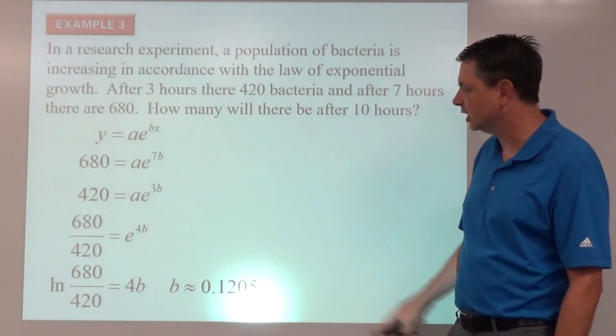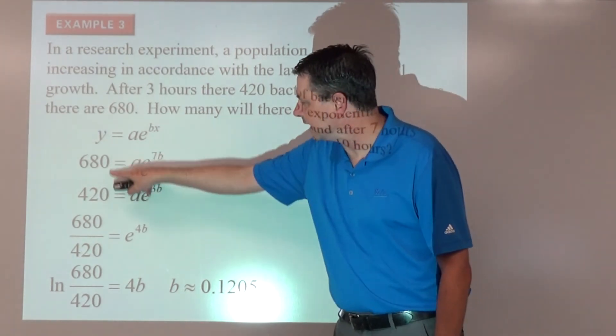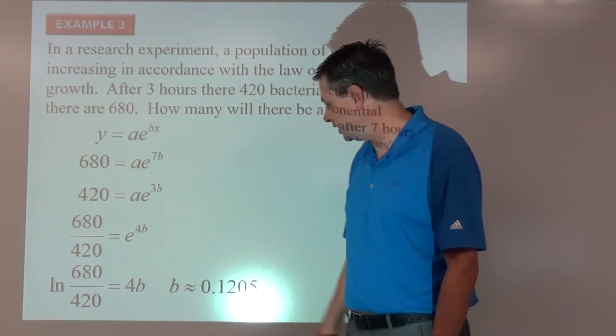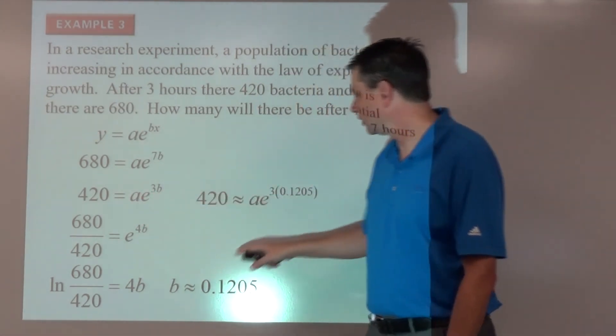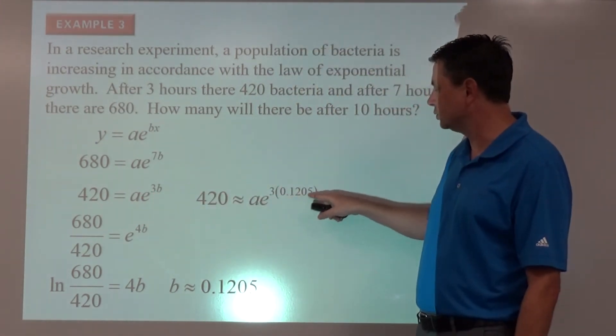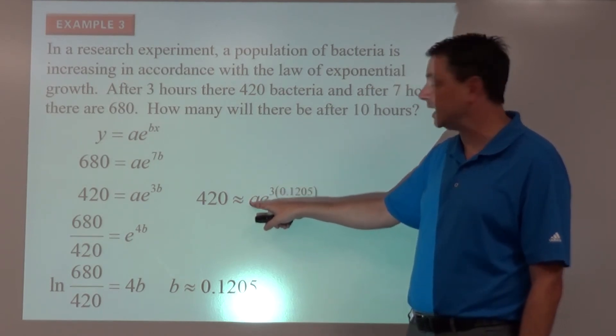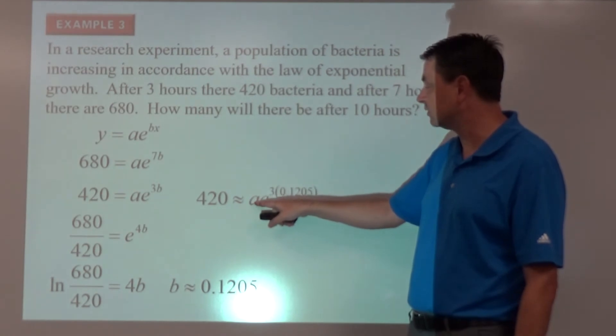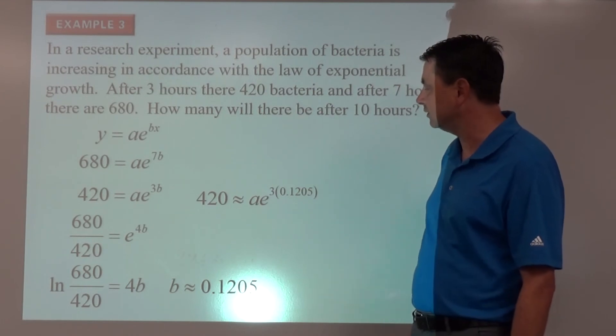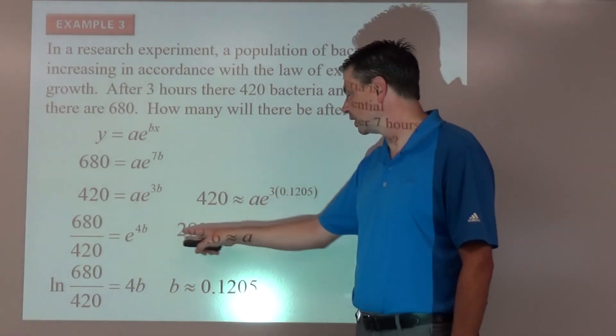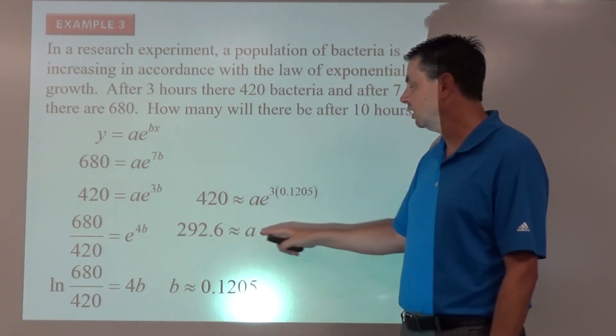So as far as generating a function, the problem is we still don't know a. So we're going to take our b value, take it into one of these two equations, and plug it in for b, see if we can find the a. So if we go here and replace b with 0.1205, that's just a number, e to the power. So if we want to solve for a, since this is multiplication, let's just divide both sides by e to the power of 3 times 0.1205. If we divide that on both sides, we're going to get about 292.6. Again, we're four significant digits for a.